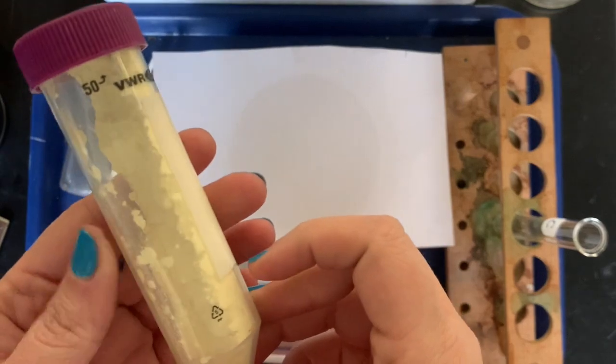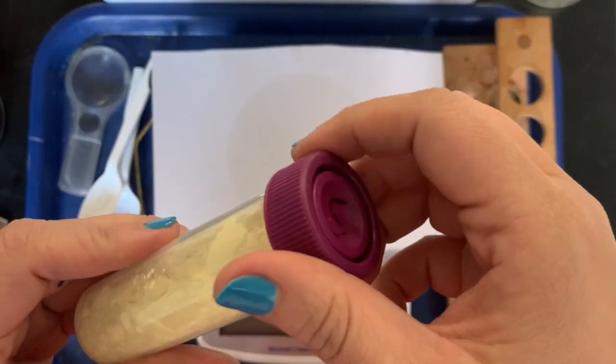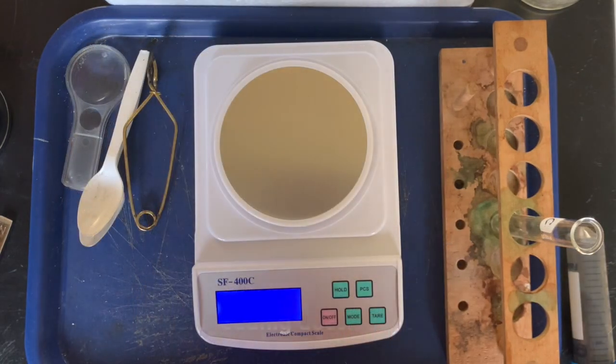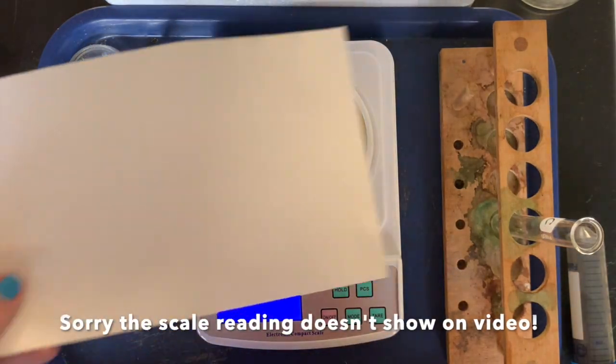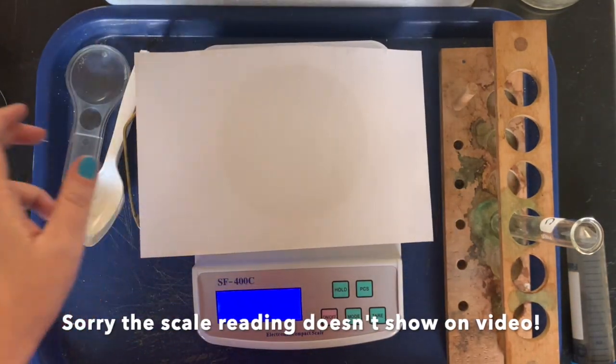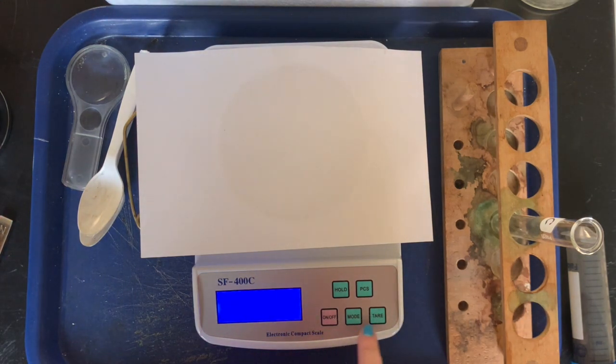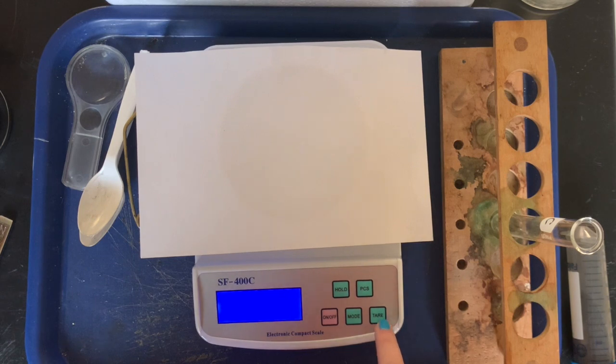All right, cool. So we're gonna measure out four grams, you said. Okay, so I've got my scale turned on and we're gonna use this paper so we're not putting sulfur right on the scale. It's got a mass of 2.37 grams, but I want to start it at zero so I'm just gonna press the tare button. There we go, and now we're at zero.